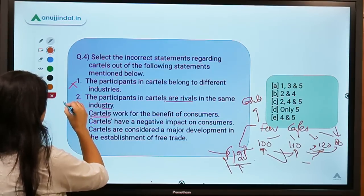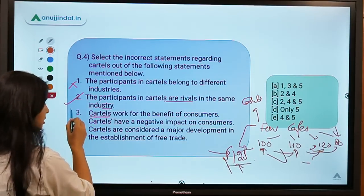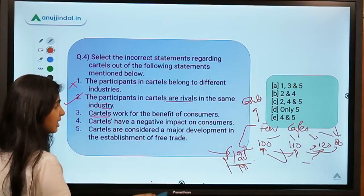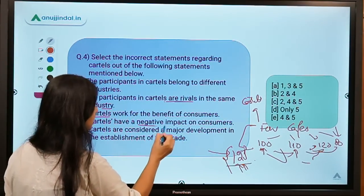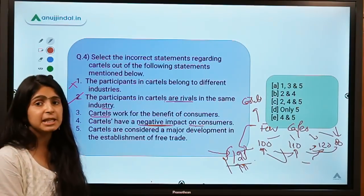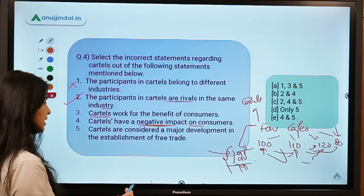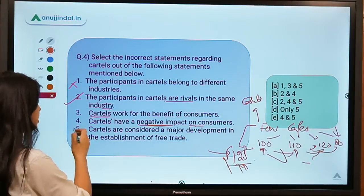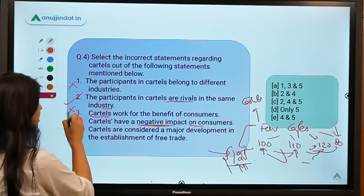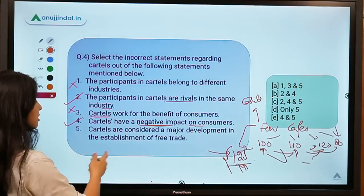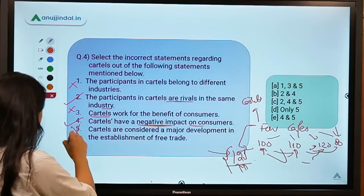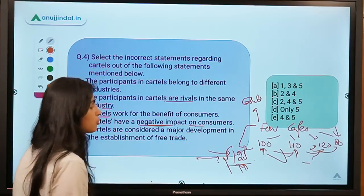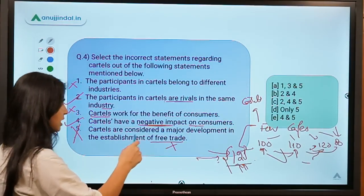Statement two is correct. Statement three is incorrect — cartels have a negative impact on consumers because when rivals form a team, they gain power to exploit buyers. Statement four is correct. Statement five says cartels are a major development in the establishment of free trade — this is incorrect. Cartels actually discourage competition: the consumer previously had choice, but once a cartel forms, there's no competition and no free trade.